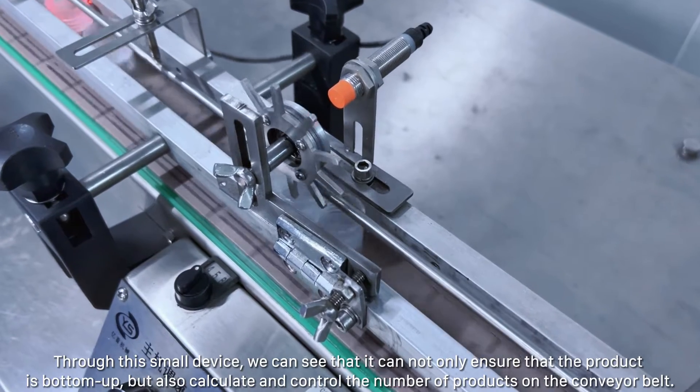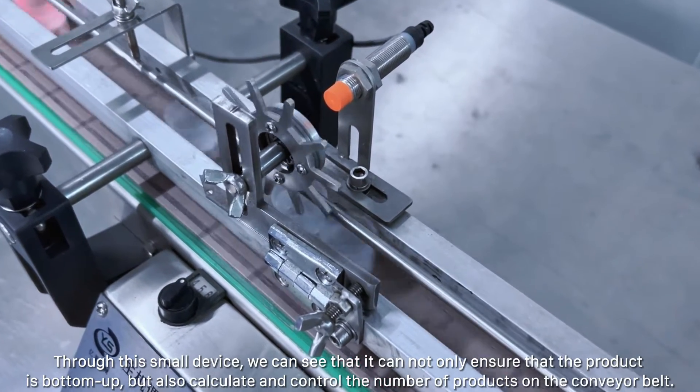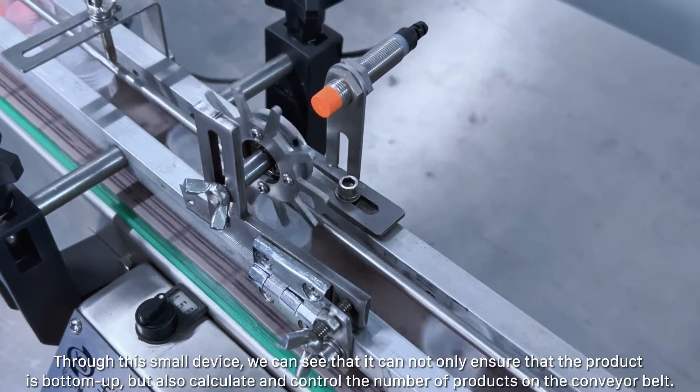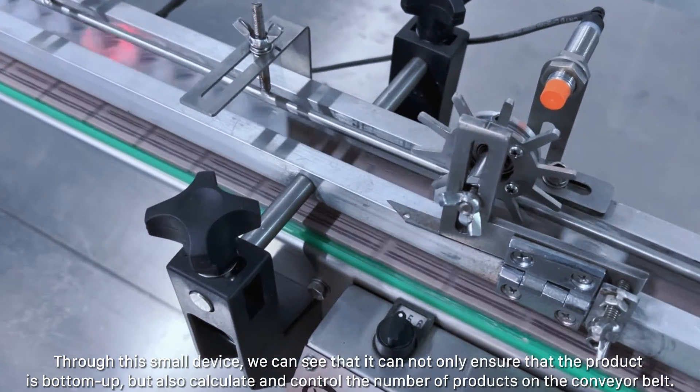Through this small device, we can see that it not only ensures the product is bottom-up, but also calculates and controls the number of products on the conveyor belt.